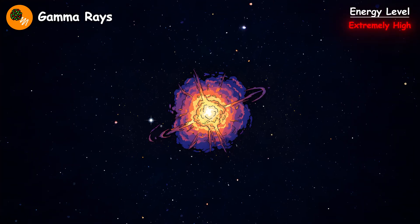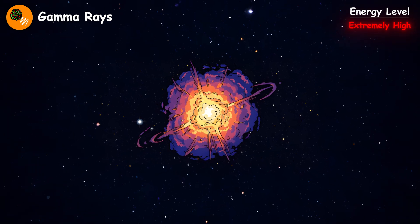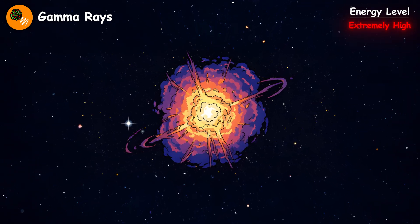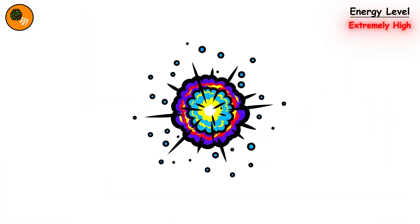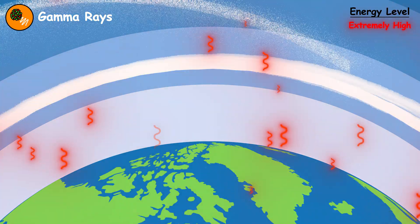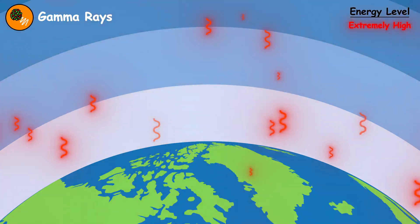The real threat comes from deep space events like supernovae and ray bursts from distant galaxies. If a nearby star went supernova within 100 light years, the gamma ray pulse could strip away Earth's ozone layer and cause mass extinction.